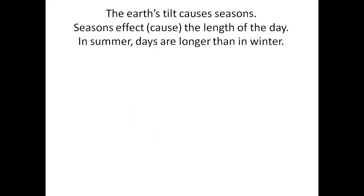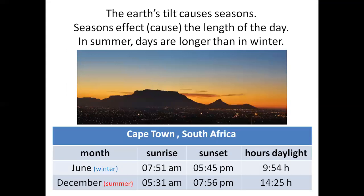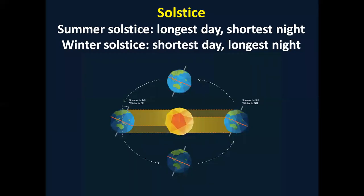The Earth's tilt causes seasons. Seasons affect the length of day — in summer, days are longer than in winter. Consider Cape Town: looking at June, a winter month, and December, a summer month, in summer the sun rises much earlier and sets much later, giving more hours of daylight — a longer day. There are two solstices: the summer solstice, which is the longest day of the year and the shortest night, and the winter solstice, which is the shortest day of the year and the longest night.